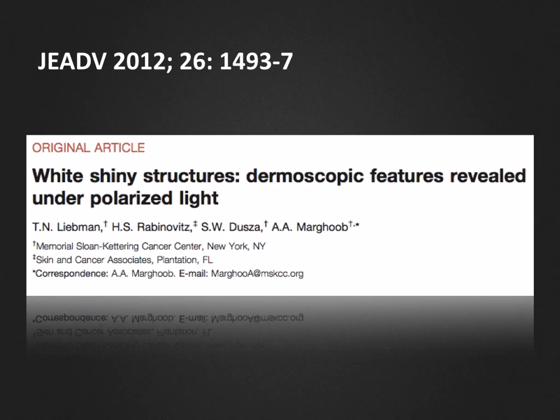Some white structures can only be discerned when using polarized light. Liebman et al. published an article in 2012 describing three different white shiny structures: white shiny lines, white shiny areas, and rosettes.